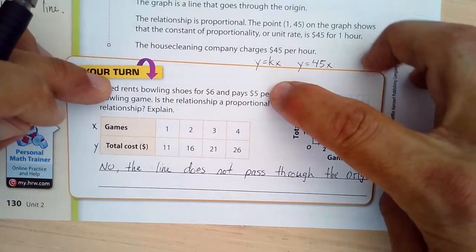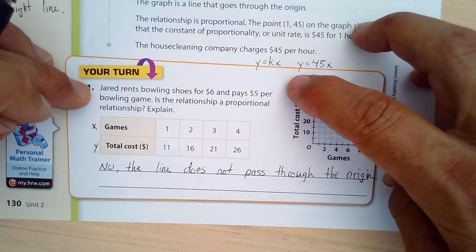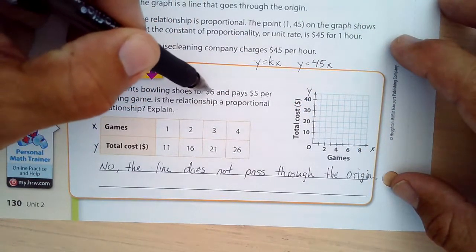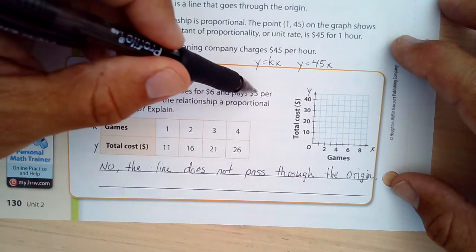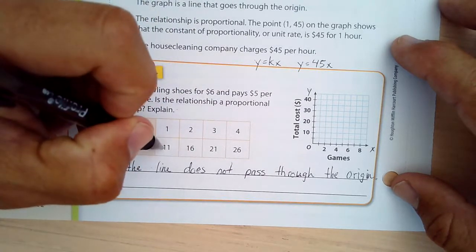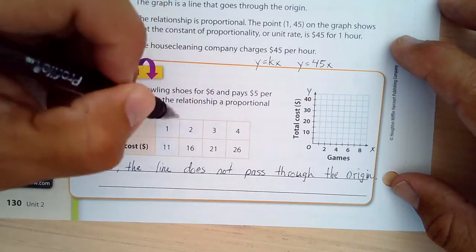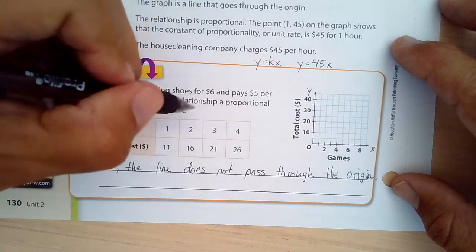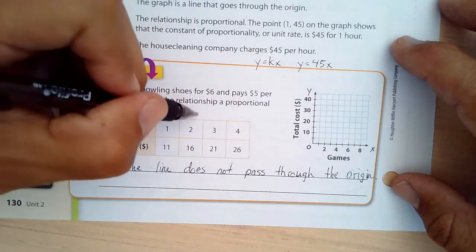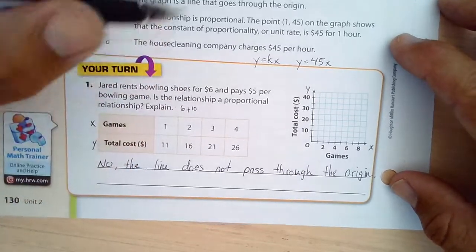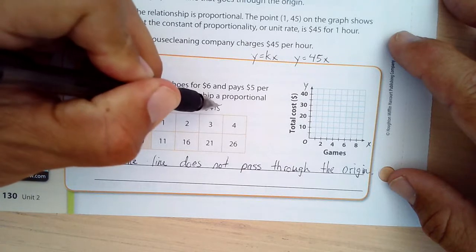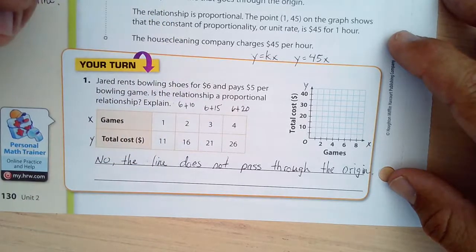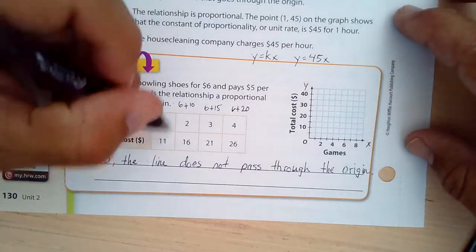Jared rents bowling shoes for $6 and pays $5 per bowling game. Is the relationship a proportional relationship? So he pays $6 and then $5 per game. So this $11 is the 6 plus 5. If you play two games, it's $6 for renting the shoes plus $10 because you're playing two games. That's how you get the 16. And then this would be 6 plus 15 because it's three games plus the shoes. And then this would be 6 plus 20 for four games. So let me graph this. 1 and 11 is somewhere around here, 2 and 16, 3 and 21, 4 and 26.